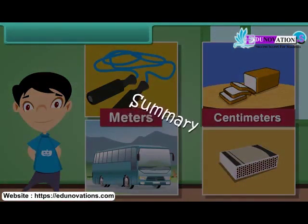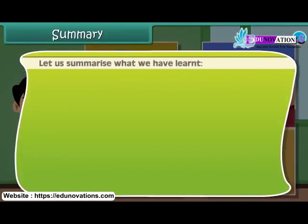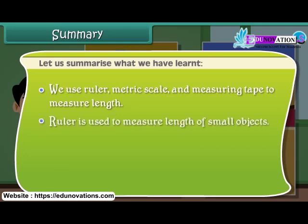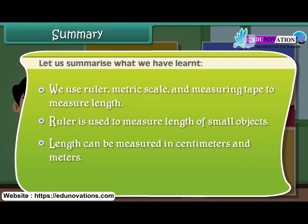Let us summarize what we have learned. We use ruler, metric scale and measuring tape to measure length. Ruler is used to measure length of small objects. Length can be measured in centimeters and meters. 1 meter is equal to 100 centimeters.